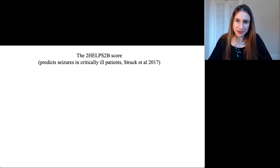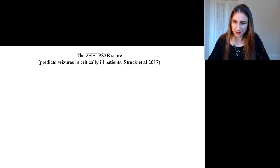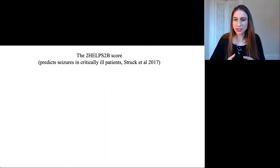I'm going to give you an example of a fully interpretable machine learning model where you can really understand how the variables are jointly related to each other to form the predicted outcome. This is called the 2-HELPS2B score, which predicts brain seizures in patients that are in the intensive care units of hospitals.